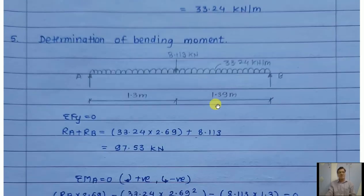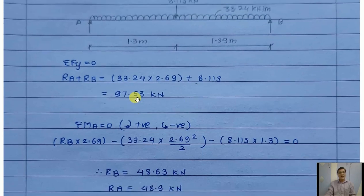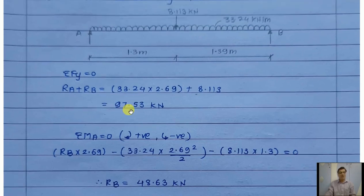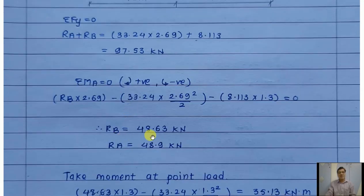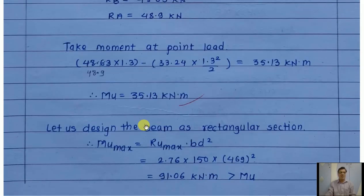Now let us calculate the bending moment. Supports A and B are shown in the loading diagram. The shear force V_u_max = 8.113 kN transferred by the secondary beam acts as a point load on B7, along with the UDL of 33.24 kN/m. Total load is 97.53 kN. Reactions: R_B = 48.63 kN, R_A = 48.9 kN. Maximum bending moment occurs at the point load location (where shear force equals zero), giving M_u = 35.13 kN·m.